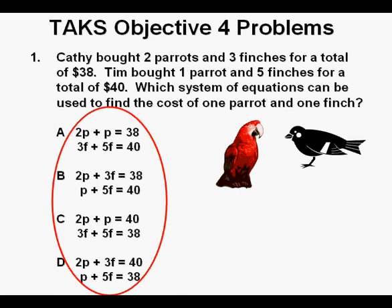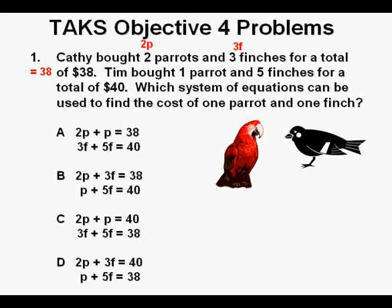If we look at the answer choices, we see that there are two variables, P and F, P representing the number of parrots and F representing the number of finches. It's just a matter of matching the correct numbers with the correct variables. In this first sentence, we have 2 parrots and 3 finches for a total of $38.